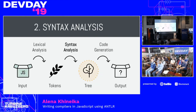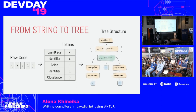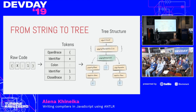Syntax analysis takes these tokens and transforms them into a tree structure that describes not only the pieces of the syntax but also their relations to each other. For example, as shown on the slide, two identifiers — x and the number 1 — separated by a colon represent a property assignment statement. You can think of the tree as a map, a way to read our source code in a parsed form.